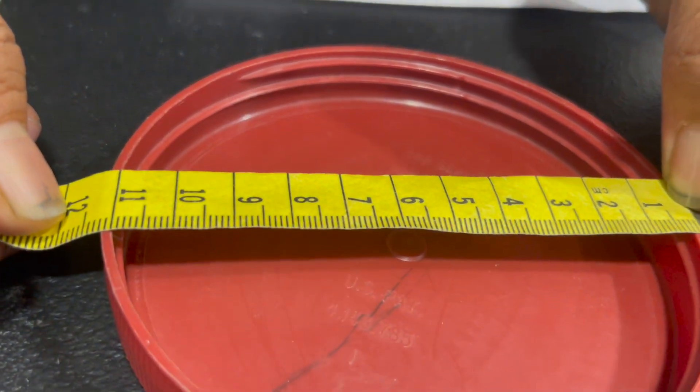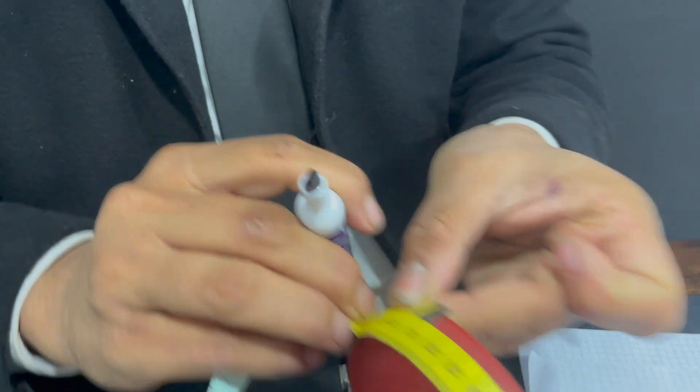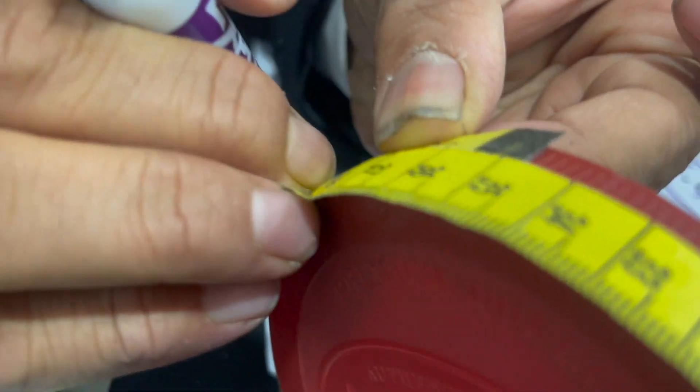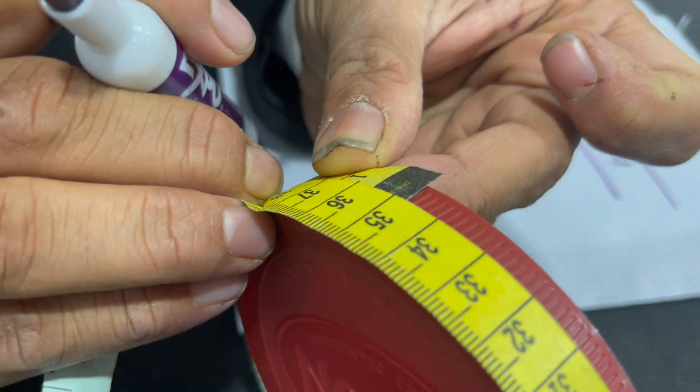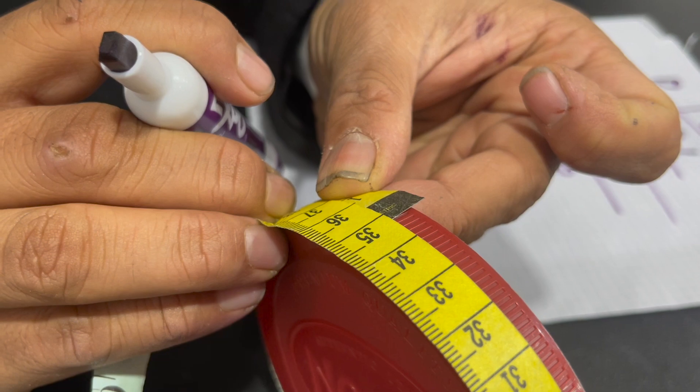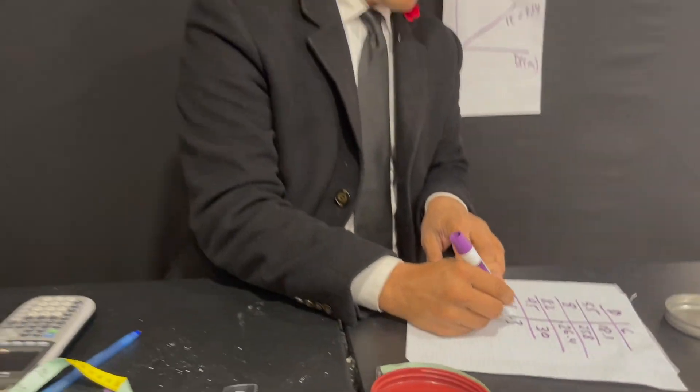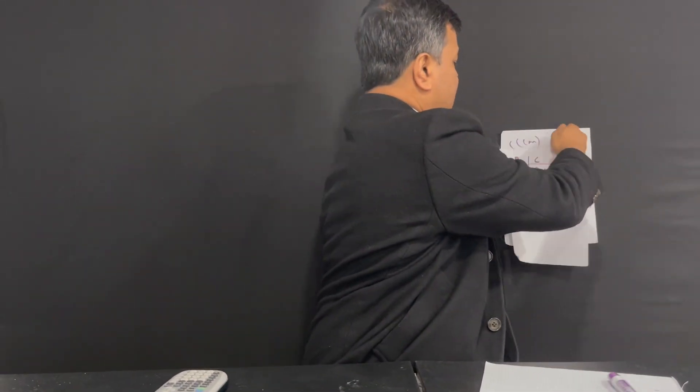Diameter is 11.1. And the circumference would be 35.5, 35.6. Now I'm going to put them here over here. So now what I'm going to do.